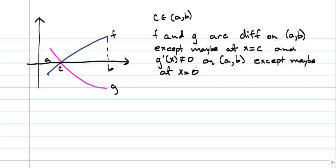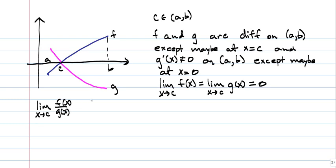Now something else we need to suppose, and you can see this from the graph, that the limit as X goes to C of F of X is the same as the limit as X goes to C for G of X. These are both equal to 0. So if we were to talk about the limit as X goes to C of F of X over G of X, we have the indeterminate case of 0 over 0. So indeterminate. So we would find 0 over 0.